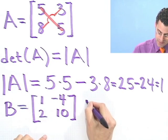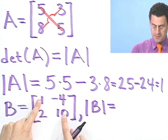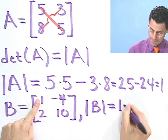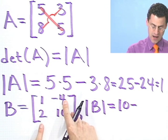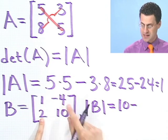OK, well, let's see. The determinant of B equals 1 times 10, which is 10, minus 4 times 2, which is negative 8.